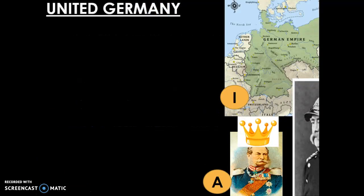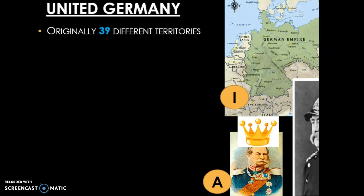Let's go ahead to the next slide to see what exactly happens in Germany once the country becomes united. The interesting thing about Germany is that Germany has not always been a united country. Originally, Germany was pretty much made up of 39 different territories that did not get along.